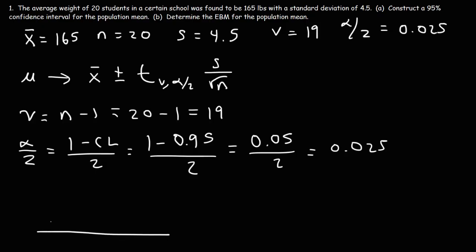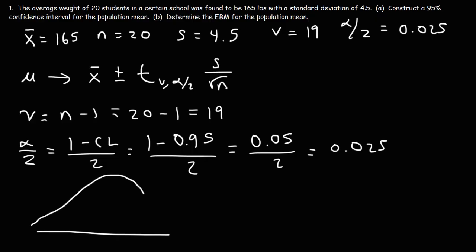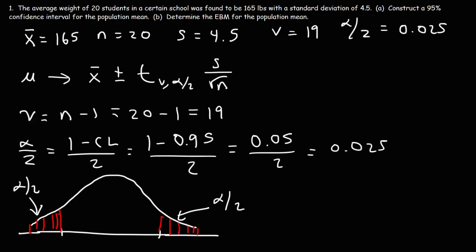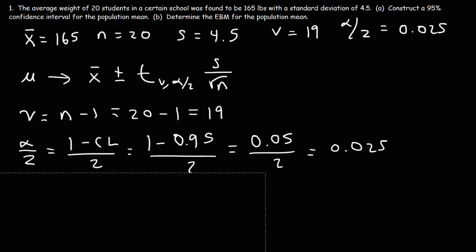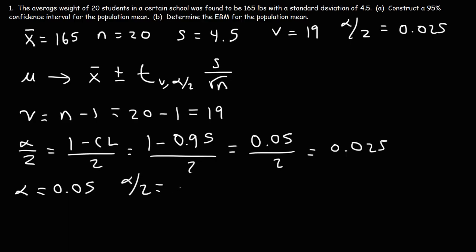For a visual illustration, consider a graph with two shaded tail regions. The area to the right is alpha over 2 (one-tail alpha), and the area to the left is also alpha over 2. Combined they equal alpha. The middle region is 1 minus alpha. So alpha in this example is 0.05, and alpha over 2 (the one-tail alpha) is 0.025.